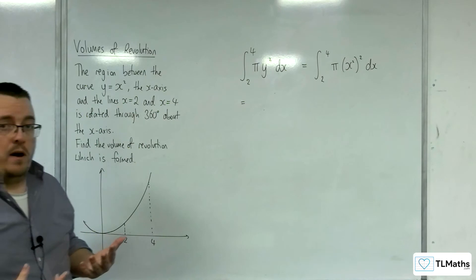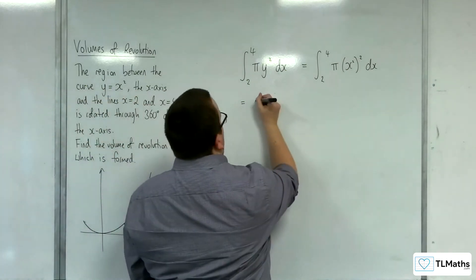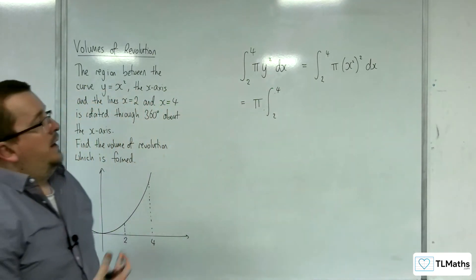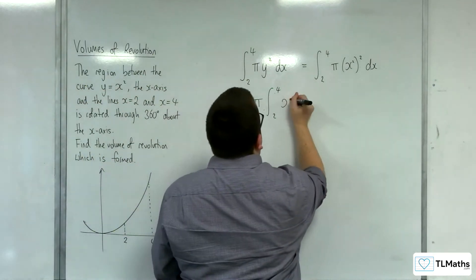Now you can bring the pi out of the integral if you like. It's just a multiplier. You don't have to. You can leave it inside if you like. And the x squared squared is just x to the 4.